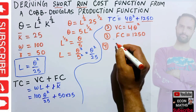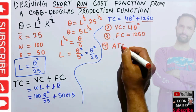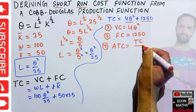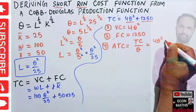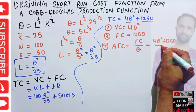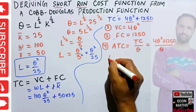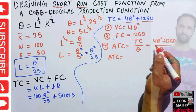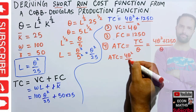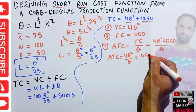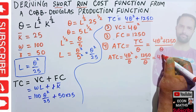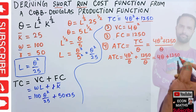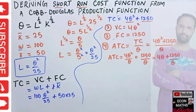The fourth kind of cost is average total cost. Average total cost equals total cost divided by Q, so ATC = (4Q² + 1250) / Q. Simplifying, this gives ATC = 4Q + 1250/Q.